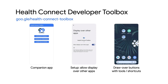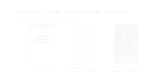This requires a few permissions to be granted: allow display over other apps, allow notifications, and allow all HealthConnect read and write permissions. The draw-over UI allows you to read and write data to HealthConnect without leaving the app that you're currently working on, which should help to speed up your testing iterations.